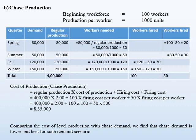For summer, we need 50,000 units, that is 50 workers. But we have 80 workers after spring, so we fire another 30 workers. In the fall quarter, demand is 120,000, so we need 120 workers. We have only 50, so we hire an additional 70 workers. Similarly in winter, demand is 150,000 units and we need 150 workers. We have 120, so we hire another 30 workers. In summary, total production was 400,000 units, total workers hired is 100, and total workers fired is 50.